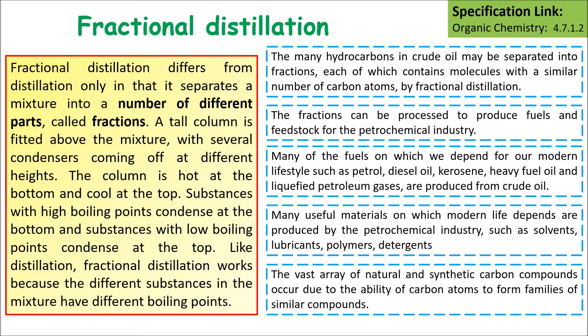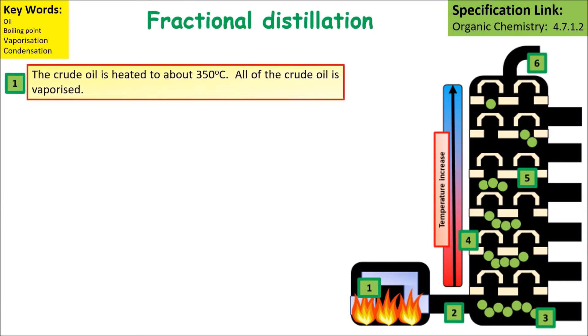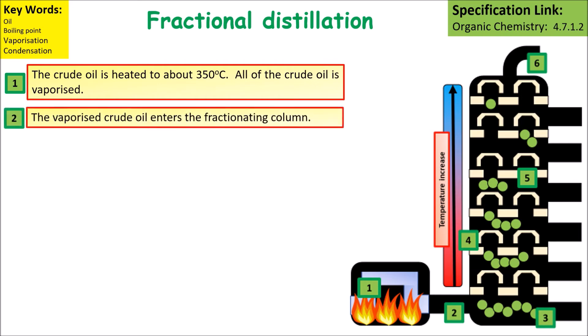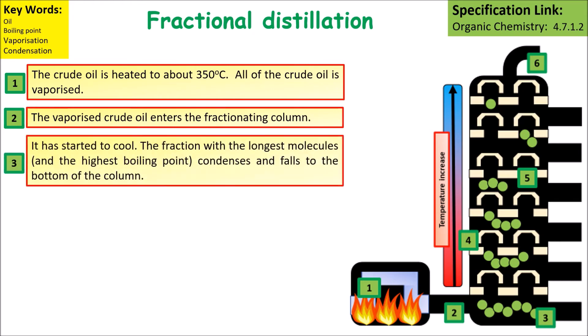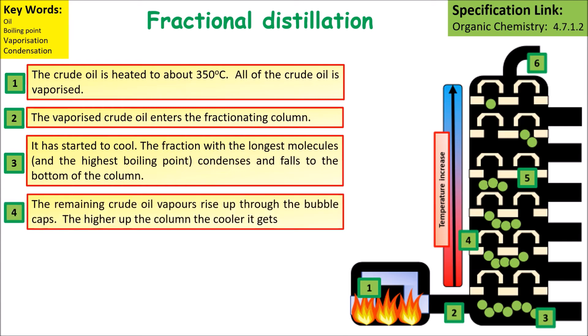Many useful materials on which we depend are also produced, such as solvents, lubricants, polymers, and detergents. A vast array of natural and synthetic carbon compounds occur due to the ability of carbon atoms to form families of similar compounds. In the actual process, crude oil is heated to around 350 degrees, at which temperature most of the crude oil is vaporized, and the vaporized crude oil enters the fractional distillation column.